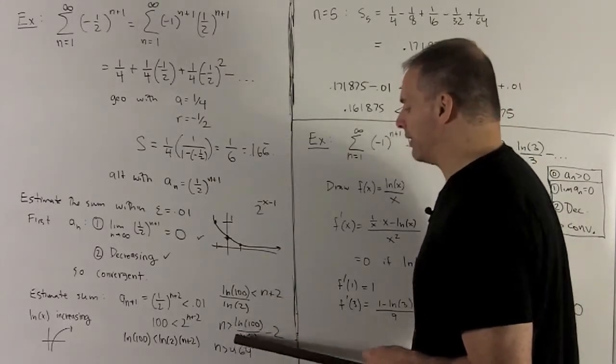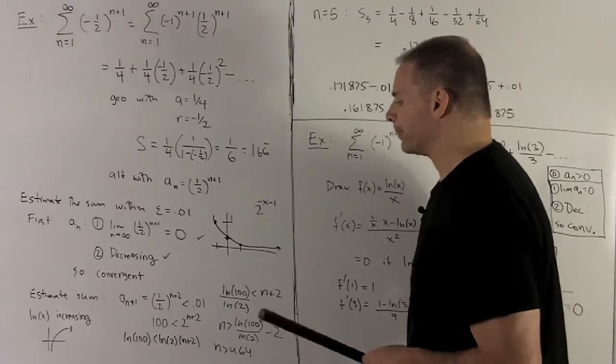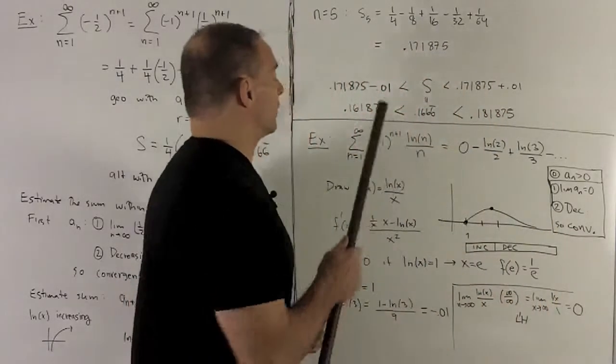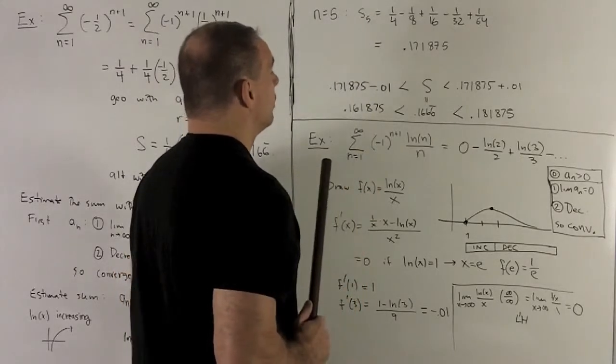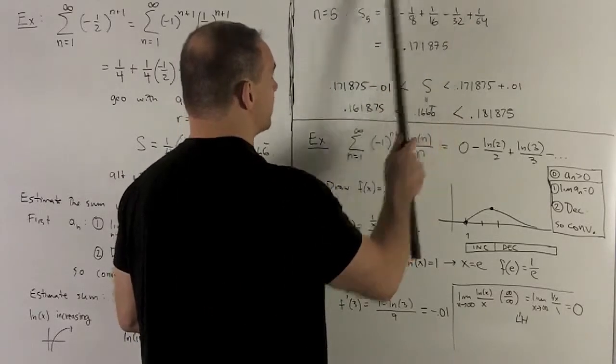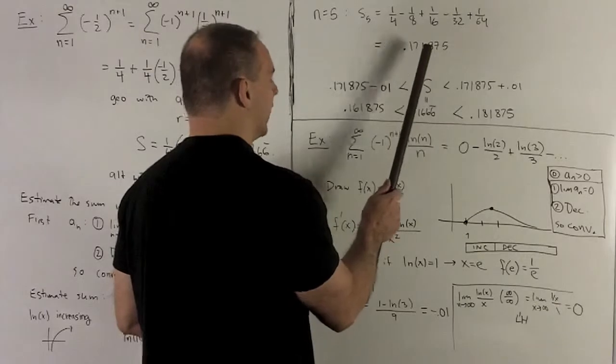Collapse this, this is saying n bigger than 4.64. So we go with n equal to 5. Take the partial sum for the first five elements of this and I get 1.71875.